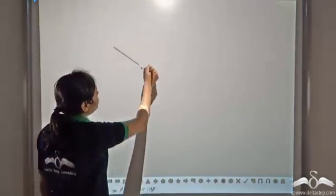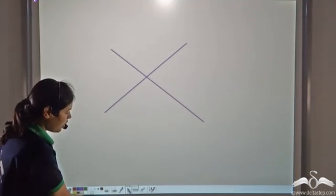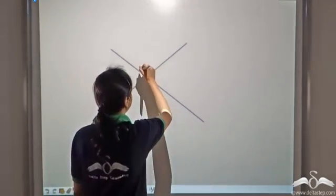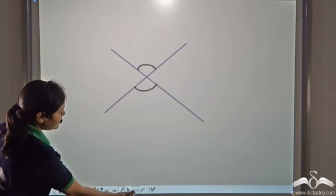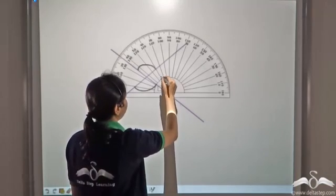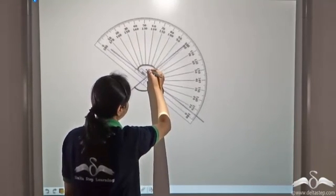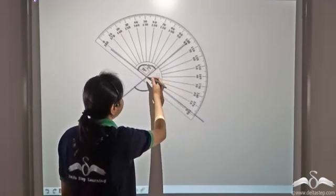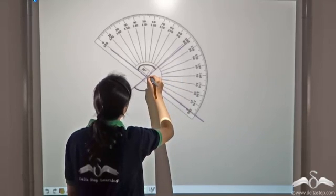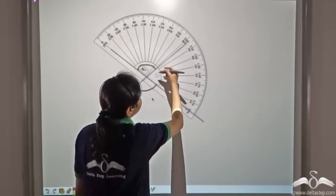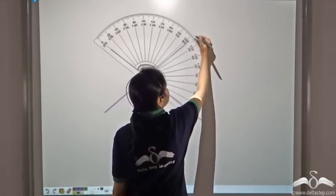Let us draw two lines — draw any two lines. Now let's mark out the vertically opposite angles. This and this form a pair of vertically opposite angles. Let's measure these angles with the help of a protractor. We keep the centre of the protractor on the vertex and make one of the arms coincide with zero. We see that this angle measures eighty-three degrees.